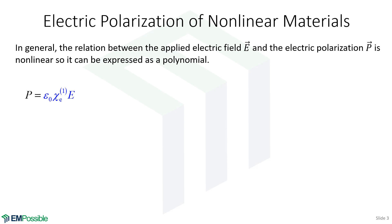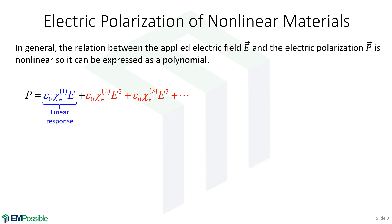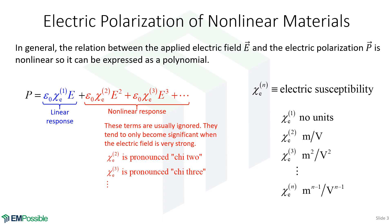If the electric field becomes intense enough, that linear relationship breaks down and becomes nonlinear, so we can't describe it with that equation alone. The easiest thing to do is expand it into a polynomial, which describes nonlinear behavior. As E becomes very intense, the higher-order terms become more dominant. What's shown in blue is the linear response; what's in red is the nonlinear response.